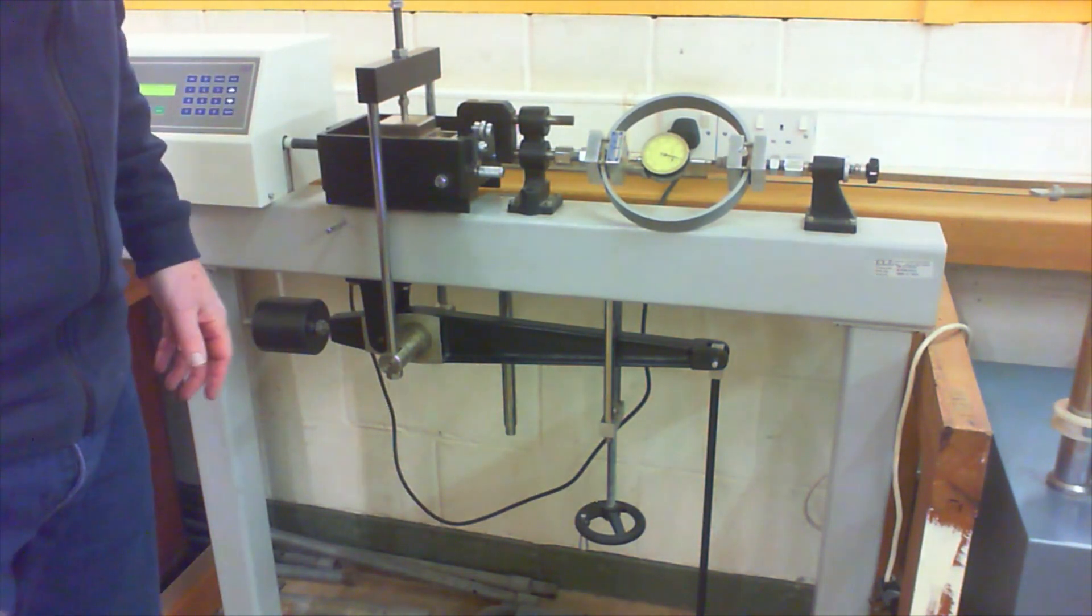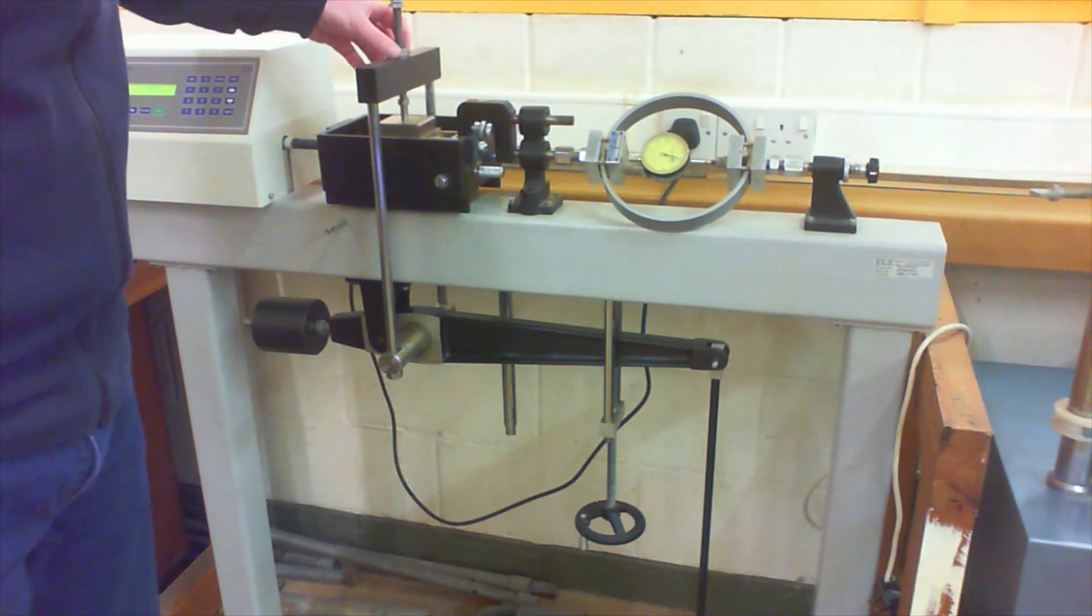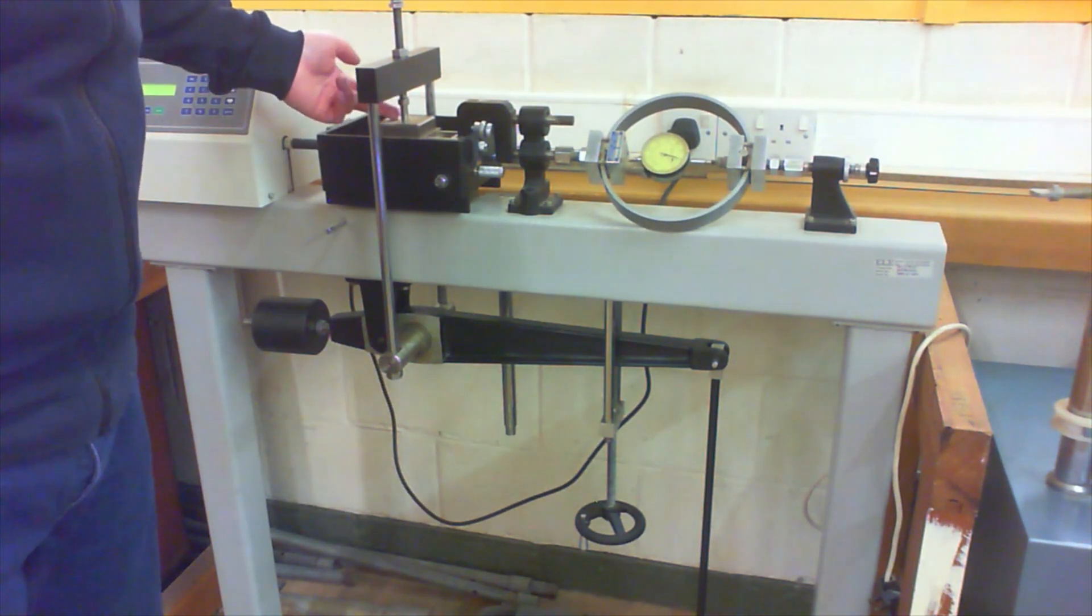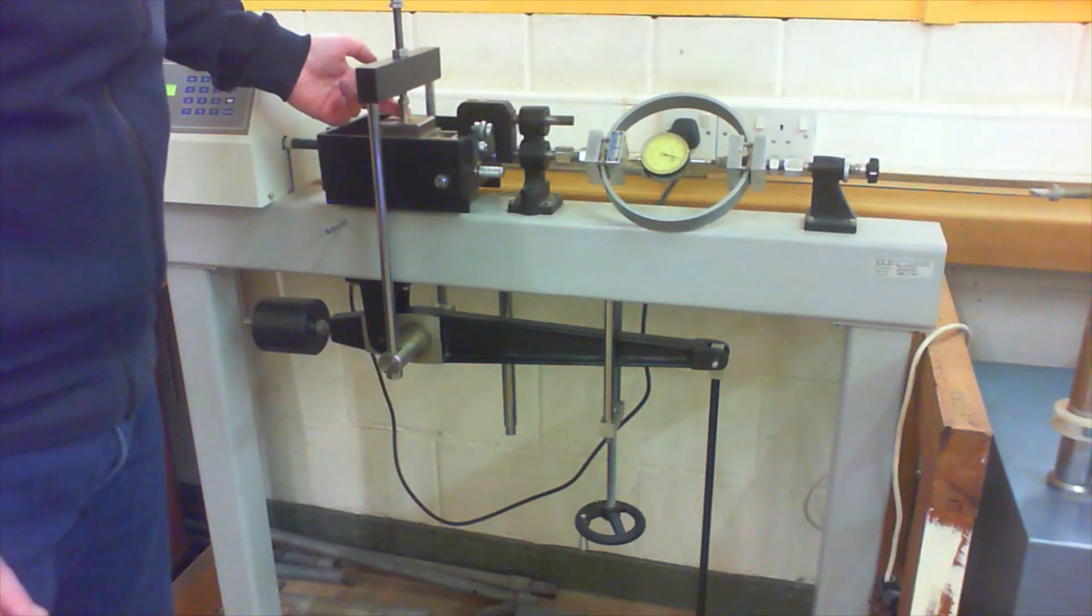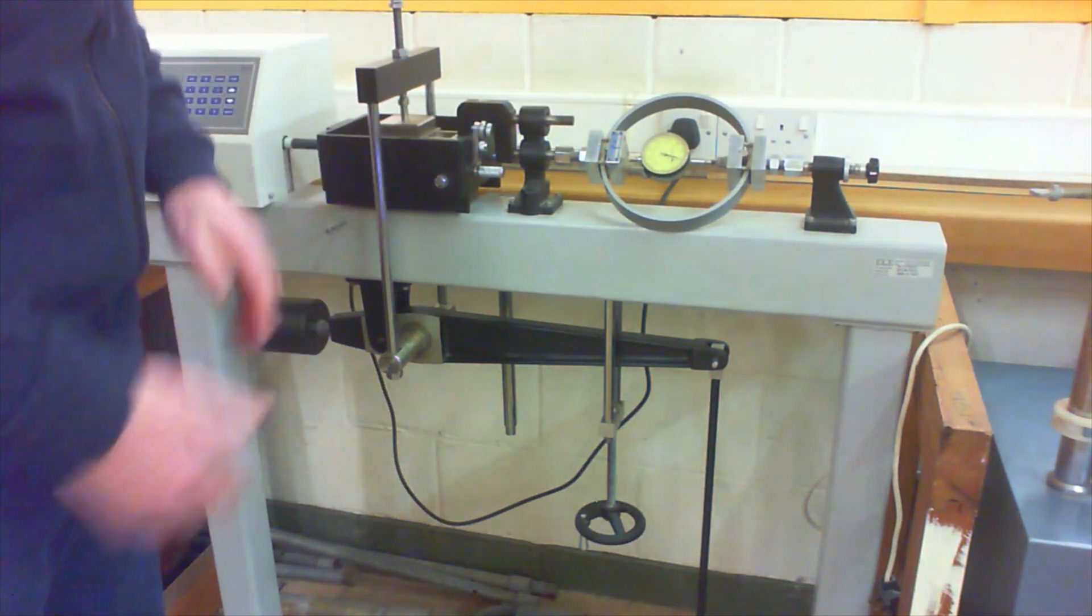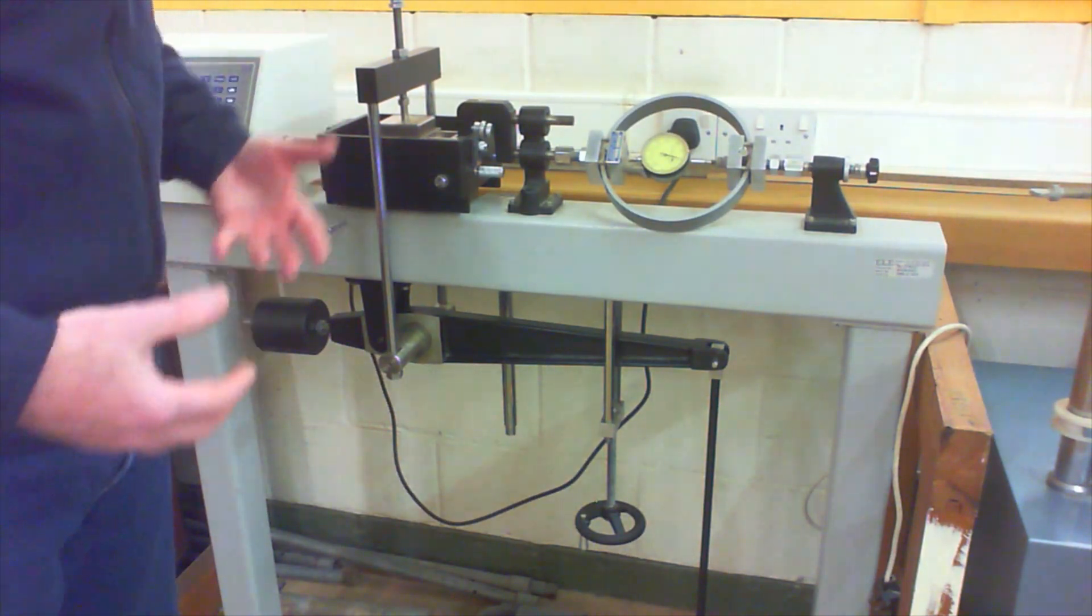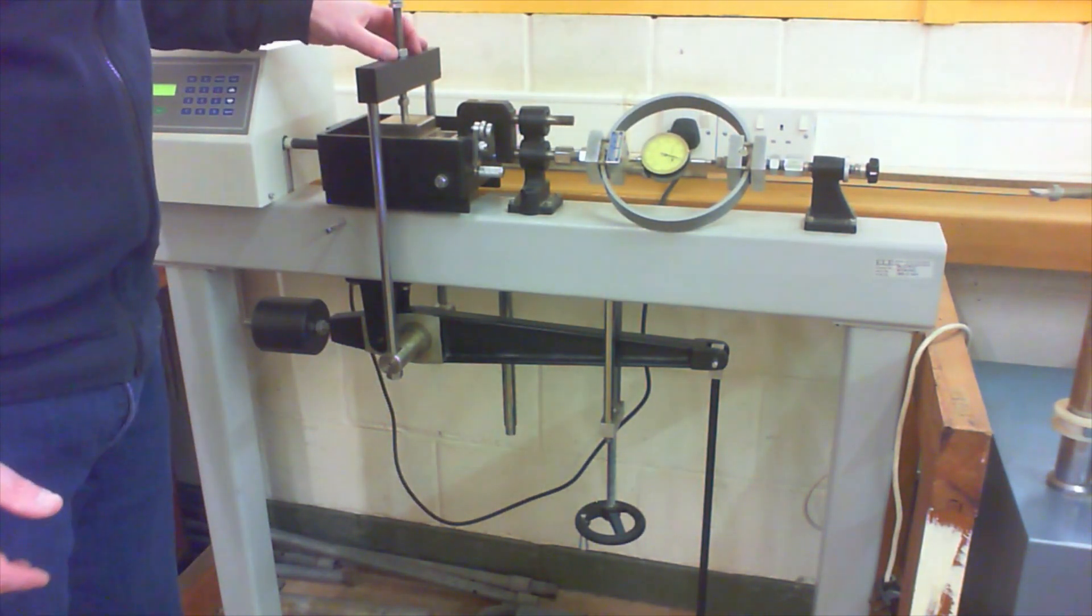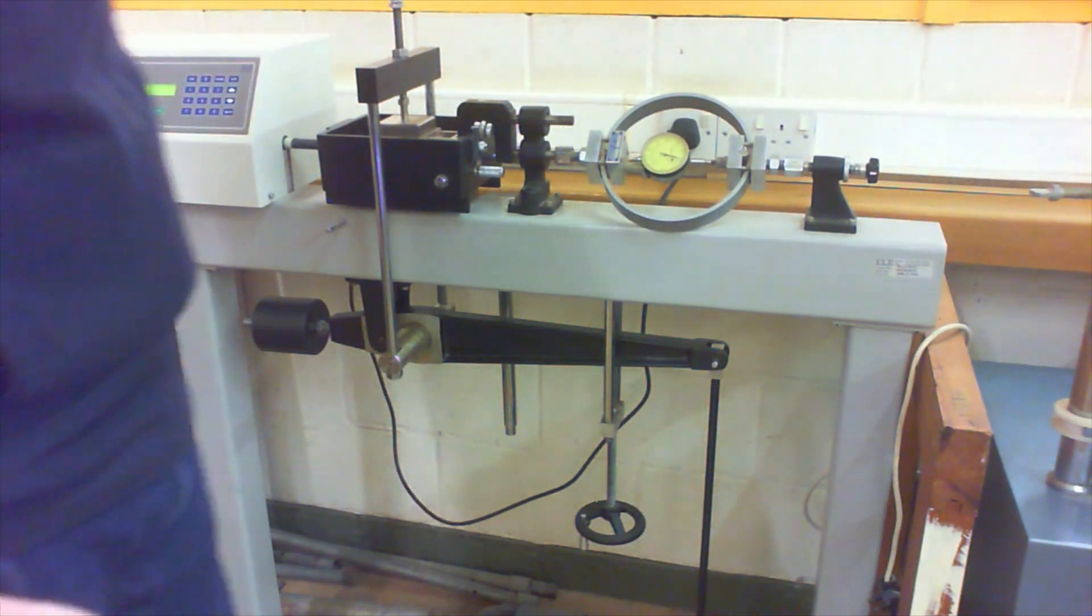So what's stopping it from moving? Well you can see here there's a loading frame now attached to the top of the sample. The loading frame is exerting a vertical stress on the sample and the higher the vertical stress the greater the resistance to sliding. To generate a high load on top of the sample, a high vertical stress, and I'll just turn the camera down here.